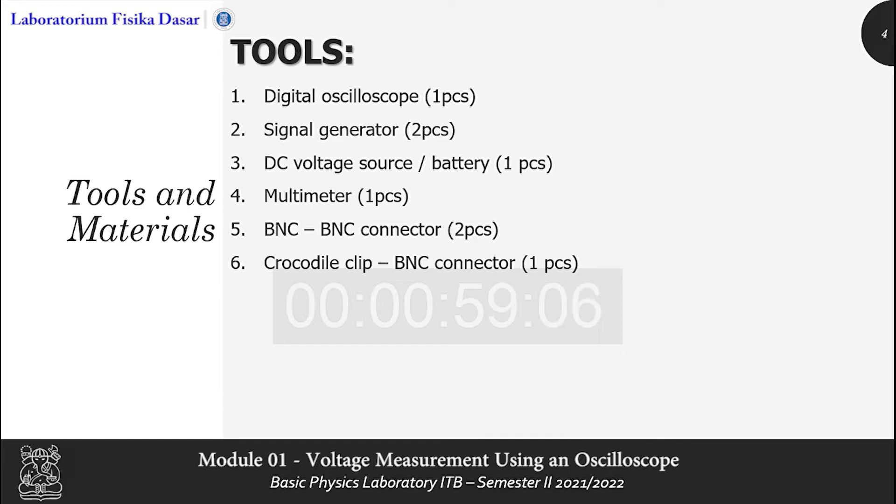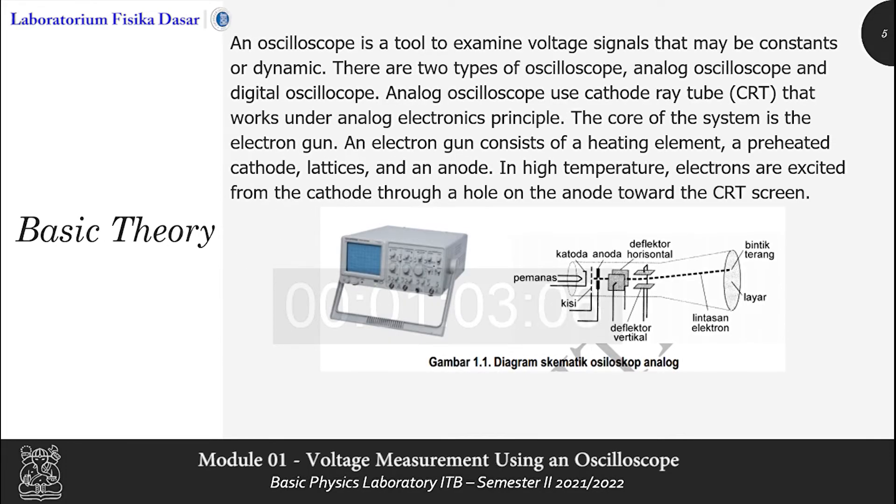And this is the experiment tools that we use in this experiment. The basic theory of this module starting with oscilloscope. An oscilloscope is a tool to examine voltage signal that may be constant or dynamic. There are two types of oscilloscope, analog oscilloscope and digital oscilloscope.